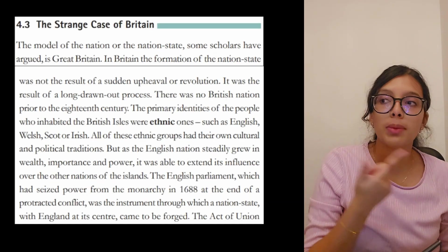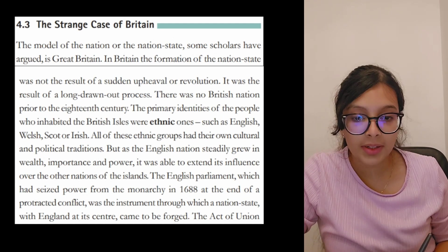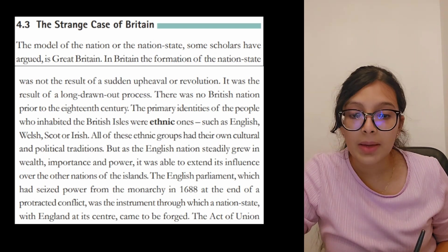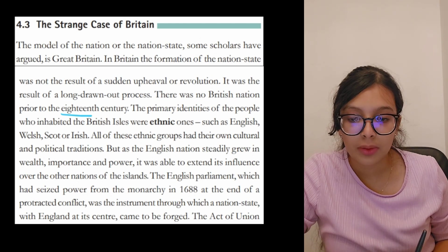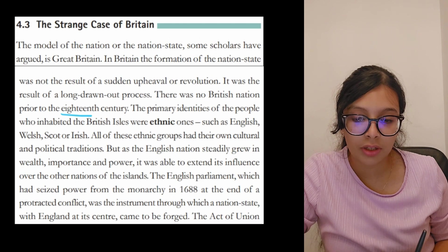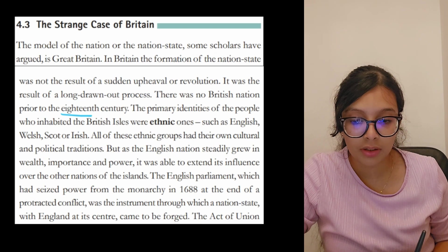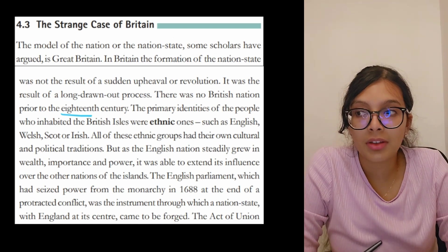The strange case of Britain: some scholars have argued Britain is the model nation state. In Britain, the formation of the nation state was not the result of a sudden upheaval or revolution — it was the result of a long drawn-out process. There was no British nation prior to the 18th century. The primary identities of the people inhabiting the British Isles were ethnic ones — English, Welsh, Scottish, or Irish — each with their own cultural and political traditions.